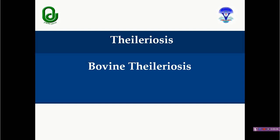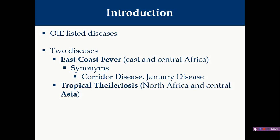Bovine theileriosis is a tick-borne disease and depending upon the area or geography, this disease is divided into two types: East Coast Fever and Tropical Theileriosis. East Coast Fever is mainly seen in African countries, while Tropical Theileriosis is mainly seen in North Africa and Central Asia including India.